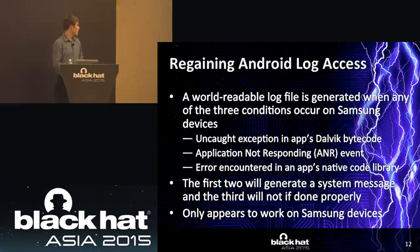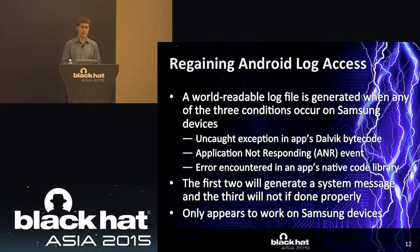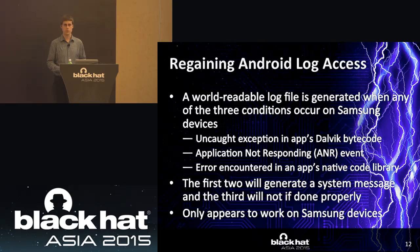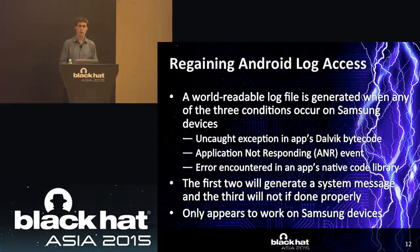Regarding regaining Android log access: I've identified three conditions which trigger a world-readable log file to be generated on Samsung builds of Android. First, an uncaught exception in the app's Dalvik bytecode — this will force-close the app and generate the world-readable log file. Second, an application not responding (ANR) event — if the application isn't responsive and is doing too much work on its UI thread, it triggers an ANR event and generates a world-readable log file. Third, if your application has a native code library and an error is encountered there, this also generates a world-readable log file. The first two generate a system message to the user; the third will not if done properly.